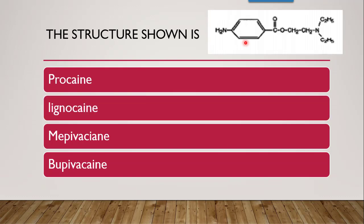Next question: identify this structure. Here there are no two CH3 groups on the phenyl ring, and the second feature is that it contains an ester group. Whenever a local anaesthetic contains an ester group, it is procaine. So the correct answer is procaine.